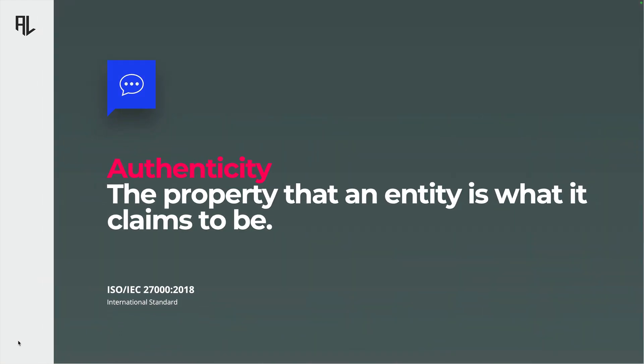Let's start by exploring the concept of authenticity. Authenticity is the assurance that the information or data you receive is indeed from the source it claims to be from. It ensures that data hasn't been tampered with or altered during transmission. In other words, when you receive a message or a file, you want to be certain that it has not been manipulated by a malicious actor. Here you can see the official and rather technical definition of authenticity – it's defined as the property that an entity is what it claims to be.